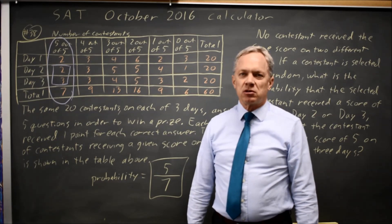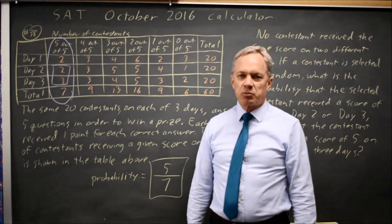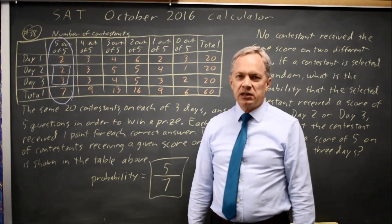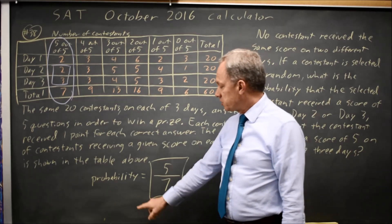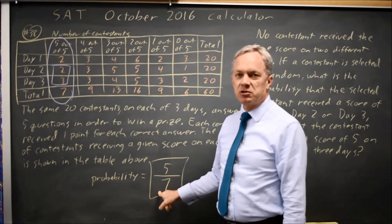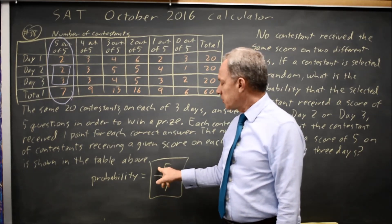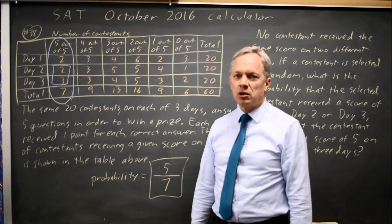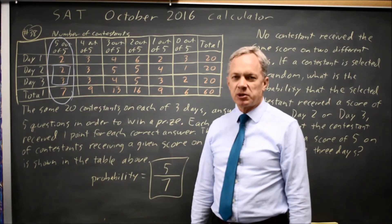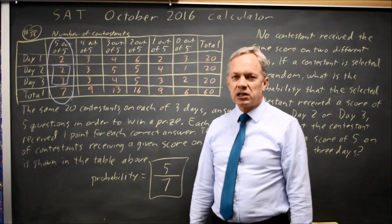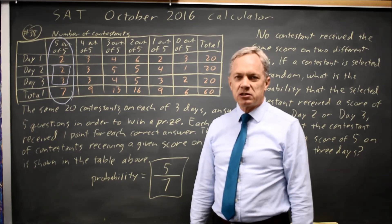College Board almost always asks you to find a probability from a table of data. Approach it by finding the denominator—all those who might have been chosen first—and then your numerator: of those who might have been chosen, which ones are they specifically asking about? That gives you a numerator over a denominator, which is your probability.